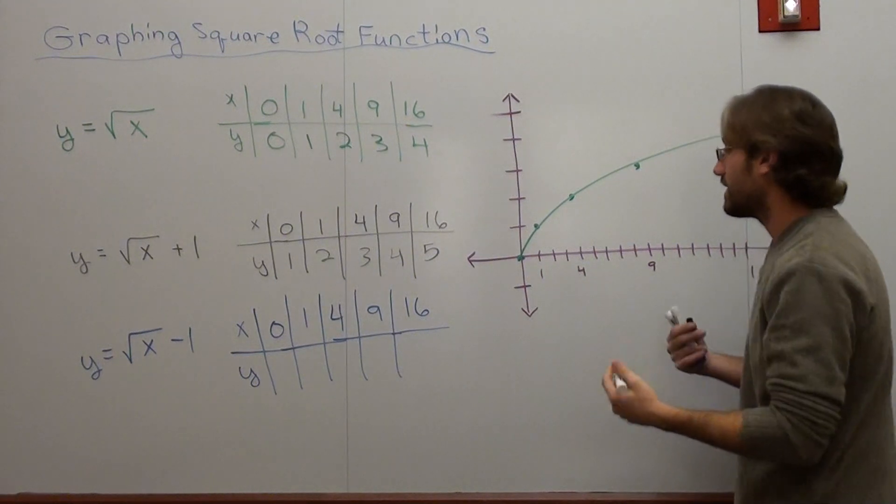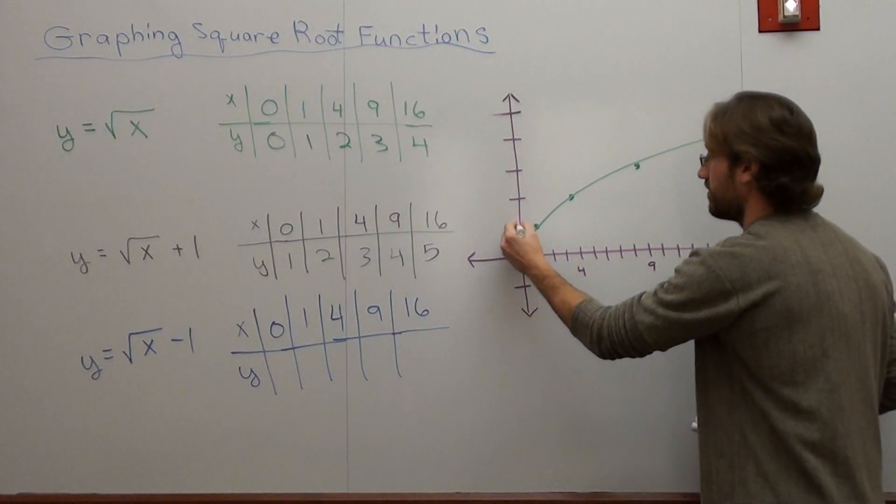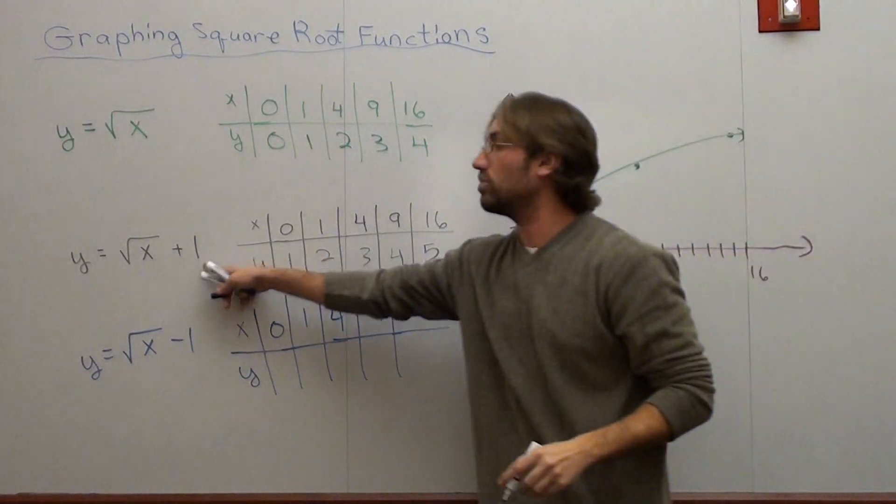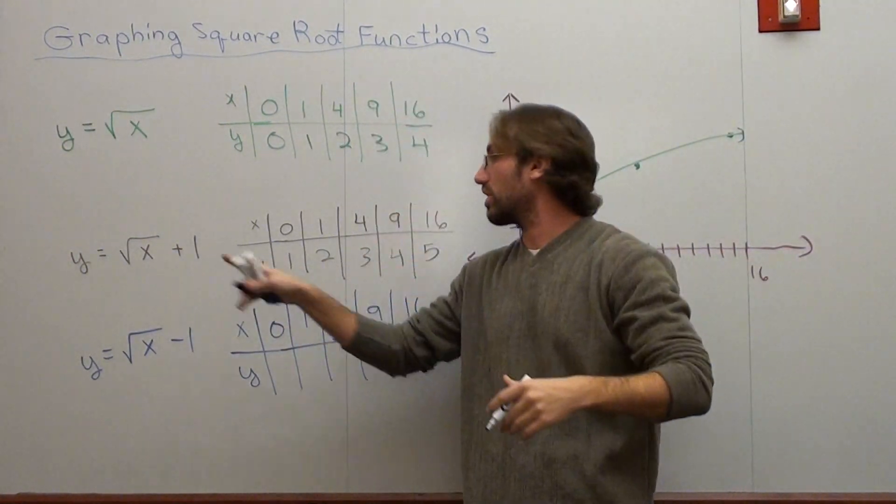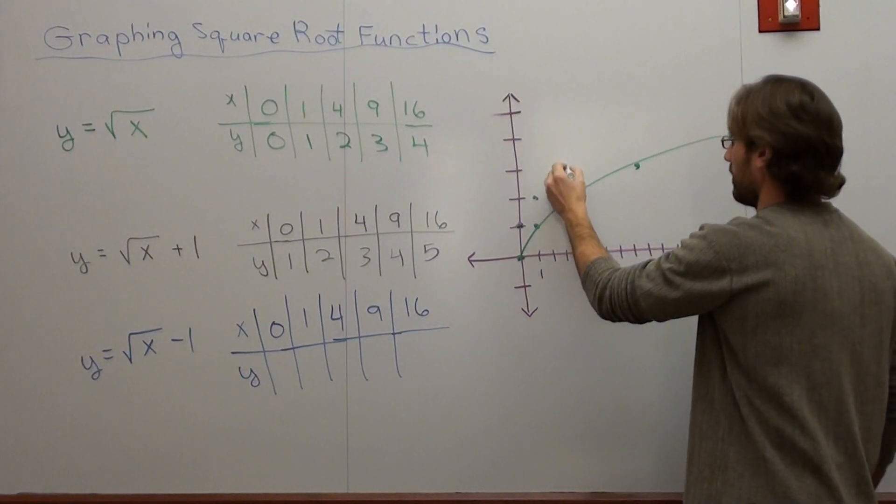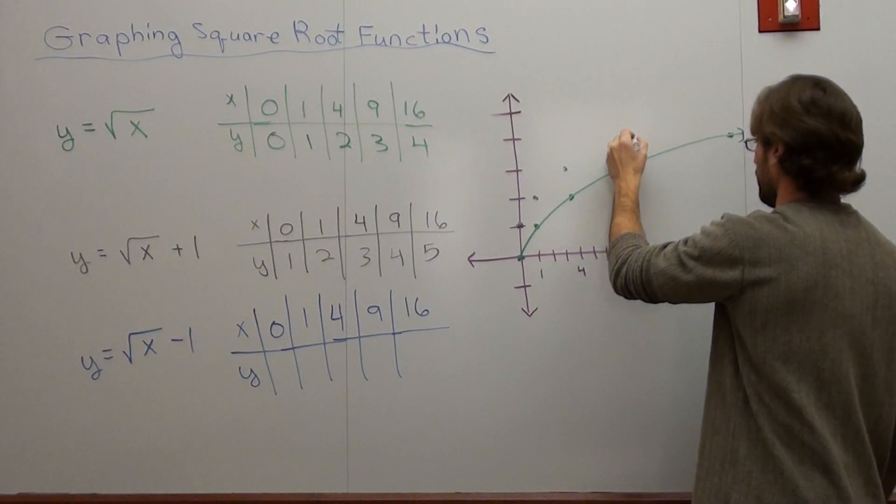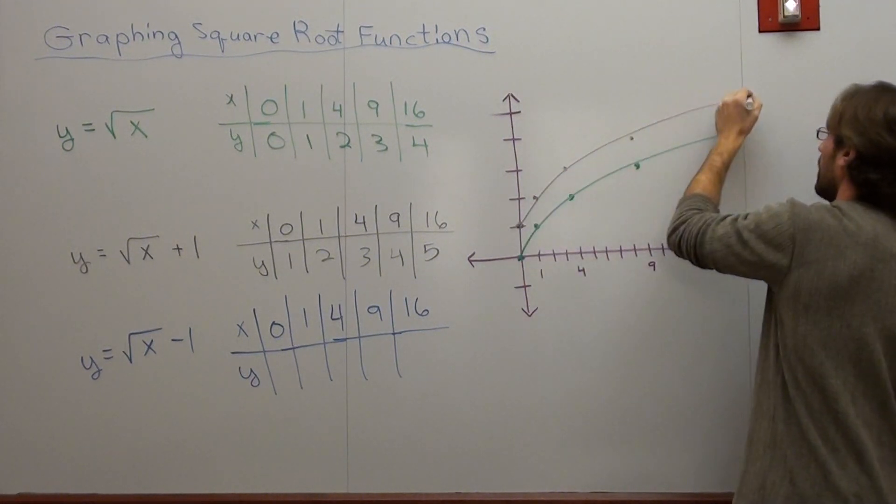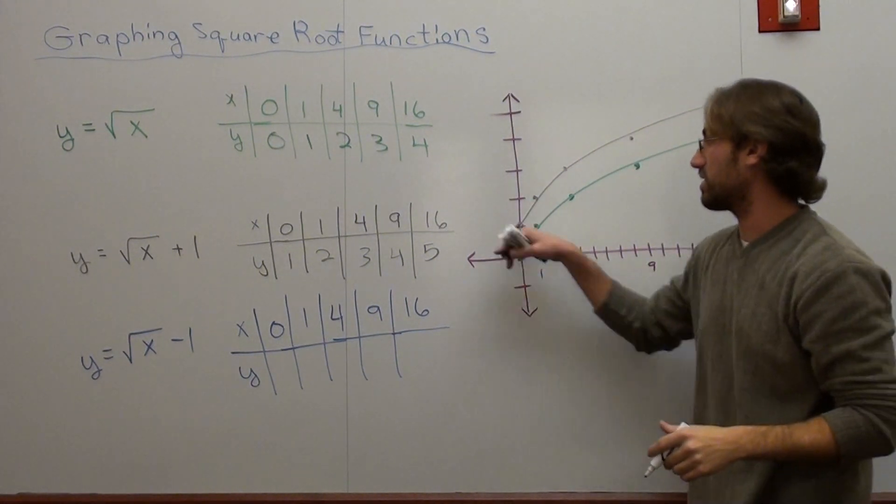And when I do that, I know that each value is shifted up one spot. If this were 2, each value would be shifted up 2. If it were a 3, it would be shifted up 3. Same type of model, except it started right there.